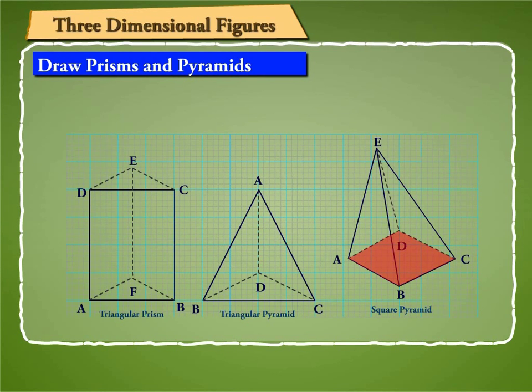Whereas ABCD square and ABE, BCE, CDE, ADE triangular are its faces. We can see that in this figure, ABE and BCE are visible and others are hidden faces.